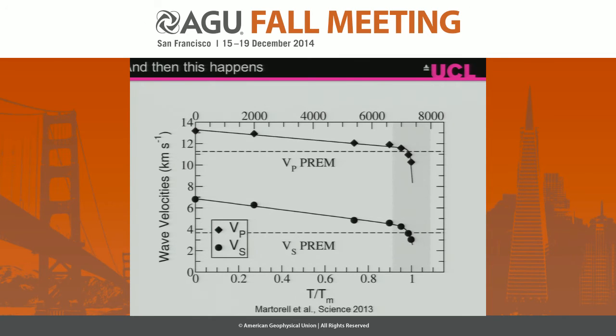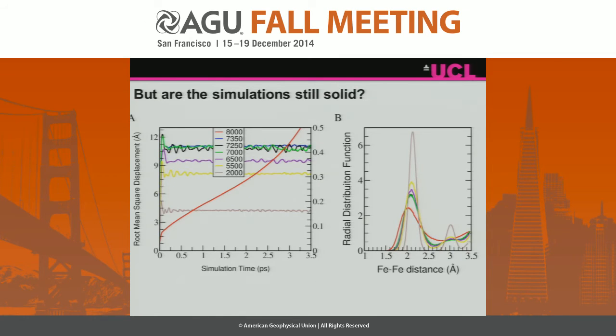Once you've gone past 95% of the melting temperature, shear wave velocities happily match the PREM value. But we have to verify the material is still a solid and hasn't melted — so we need to be careful about that.